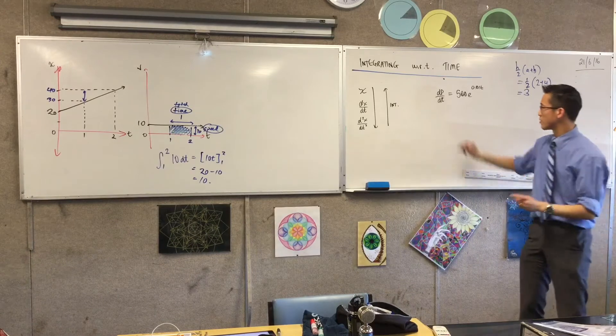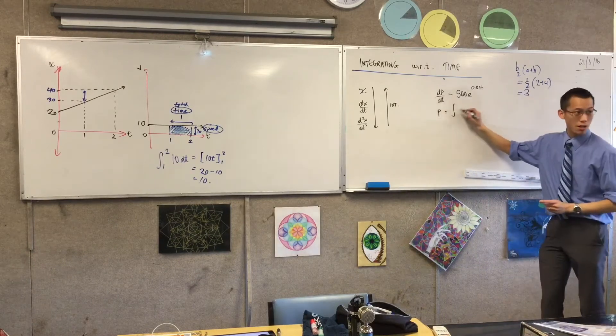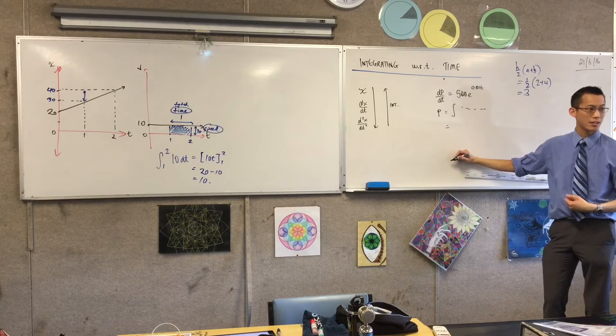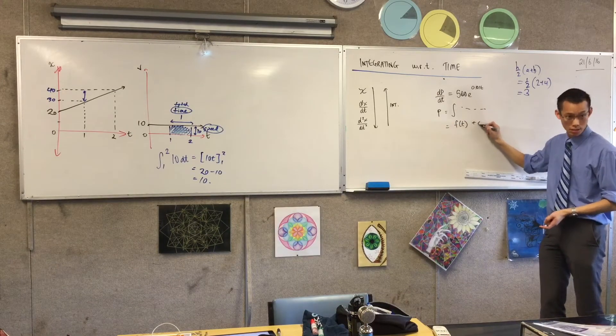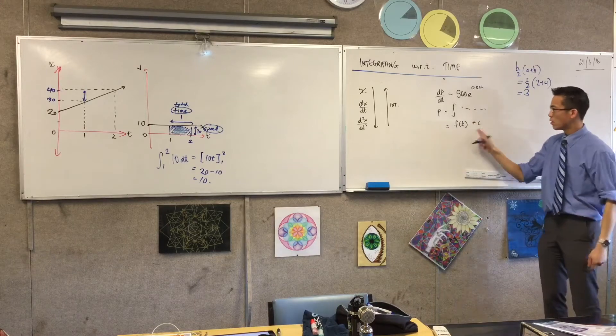You're going to integrate. You're going to integrate. So, I'm going to say P equals the integral of... Right? Then you're going to get out a function, some function of time, plus a constant. Yes? Why do you get this constant?